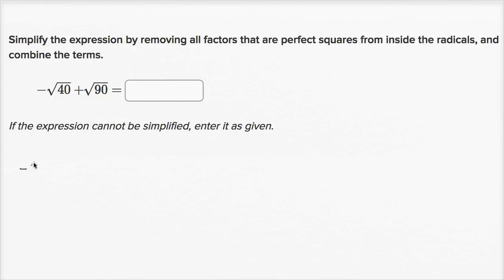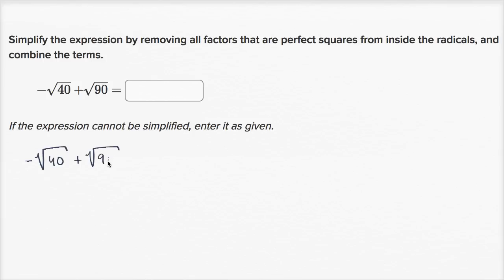So we have the negative square root of 40 plus the square root of 90. Let's see — what perfect squares are in 40? What immediately jumps out at me is it's divisible by four, and four is a perfect square.